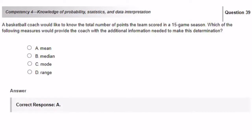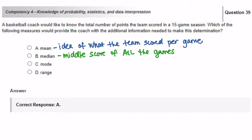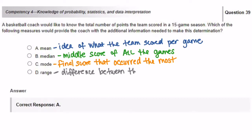A basketball coach would like to know the total number of points the team scored in a 15-game season. Which of the following measures would provide the coach with the additional information needed to make this determination? The mean would give the average number of points the team scored in the 15-game season. The median would give the middle number. The mode would tell the final score that occurred the most out of the 15-game season. And the range is the difference between the highest and the lowest score. So the mean is the best measure to provide the coach with the additional information.